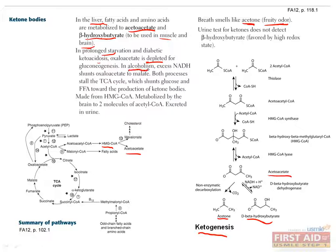Also, in alcoholism, excess NADH converts oxaloacetate to malate. These both prevent normal function of the TCA cycle, resulting in the production of ketone bodies from glucose and free fatty acids. There is a urine test for ketones, but it does not detect beta-hydroxybutyrate.